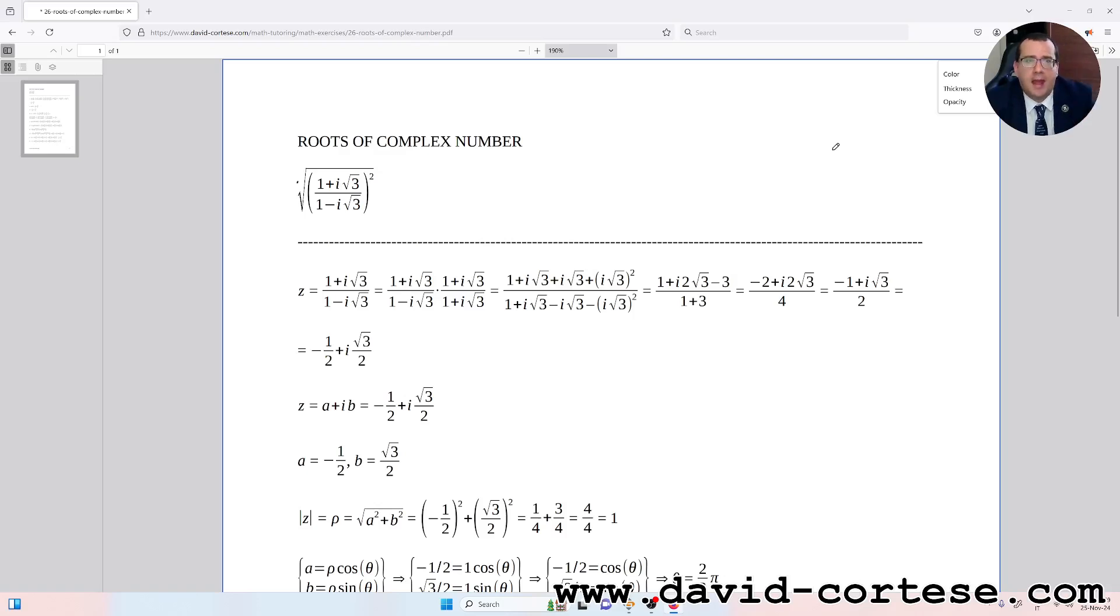We need to obtain two different roots by a square root. So the first thing we need to do is to write the number in this way: (1 + i√3)/(1 - i√3). We can multiply by (1 + i√3)/(1 + i√3). So by doing the calculation we obtain that this complex number is -1/2 + i√3/2.